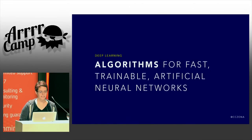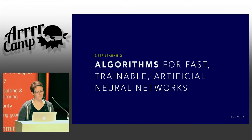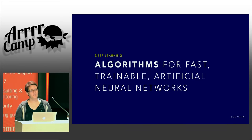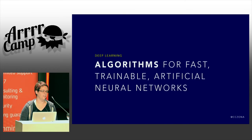Deep learning is the new hotness right now in machine learning. It is essentially algorithms for fast, trainable, artificial neural networks. This is a technology that's been around for decades — at least since the 1980s — but mostly until now in more or less theoretical scale and locked into academia.